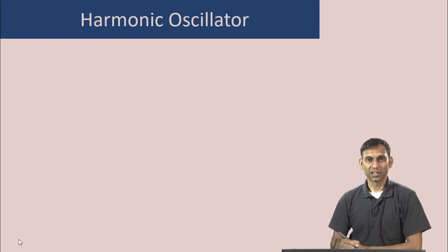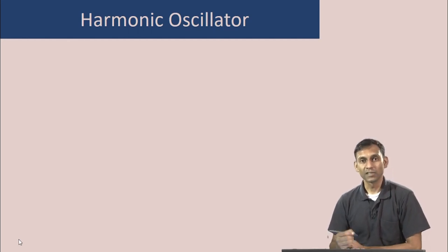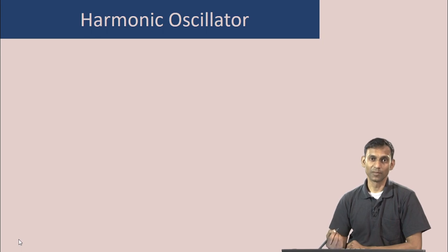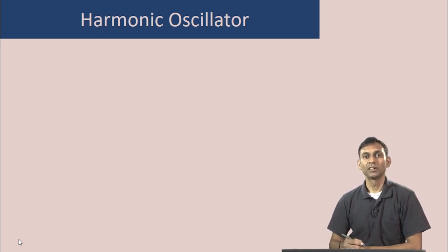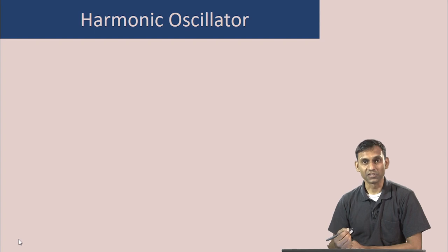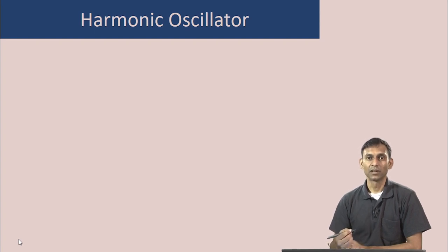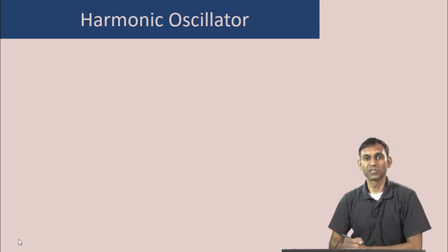During the previous discussion, we have solved the quantum harmonic oscillator problem. In other words, we have found the eigenvalues and eigenfunctions of the Hamiltonian of a single particle which moves in a harmonic potential.